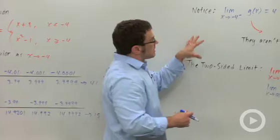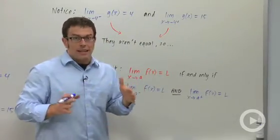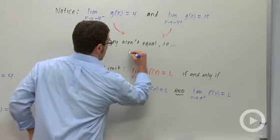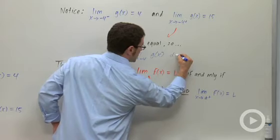Now, notice, these two limits are not equal. Whenever the two one-sided limits are not equal, the two-sided limit, x approaches negative 4 in this case, does not exist.